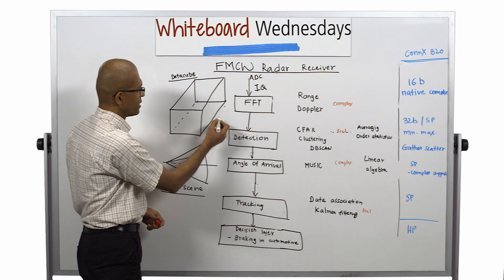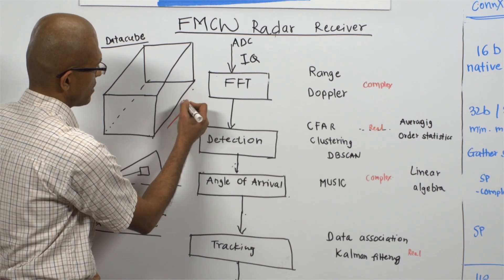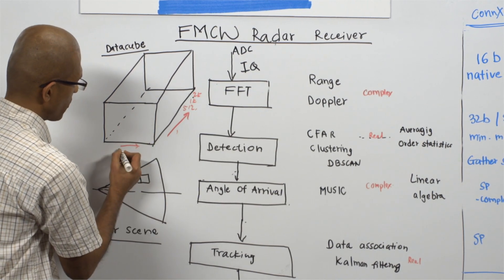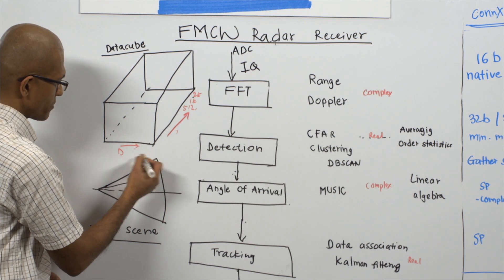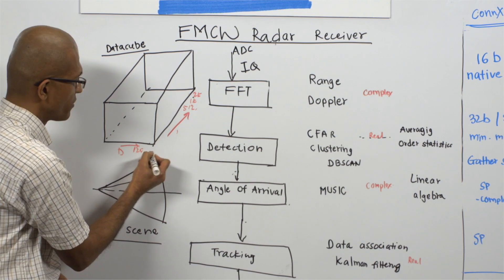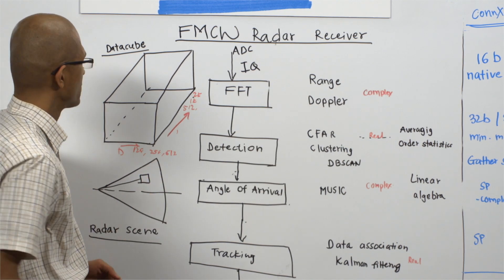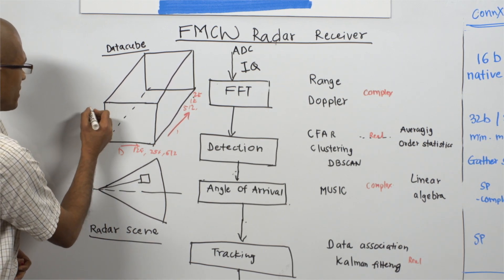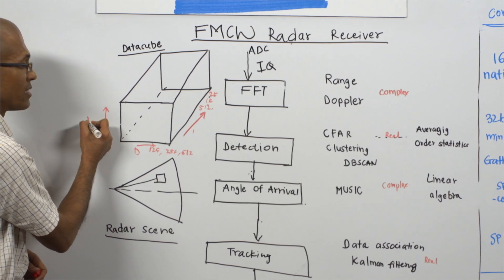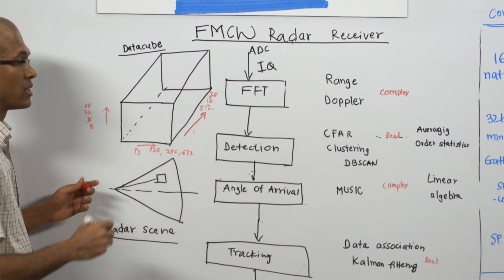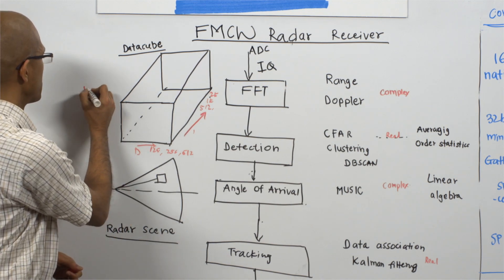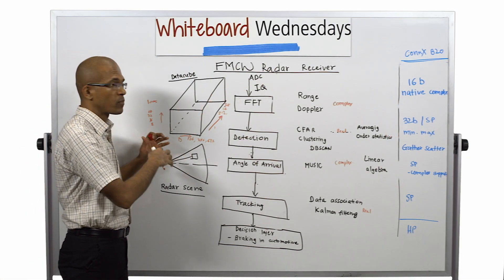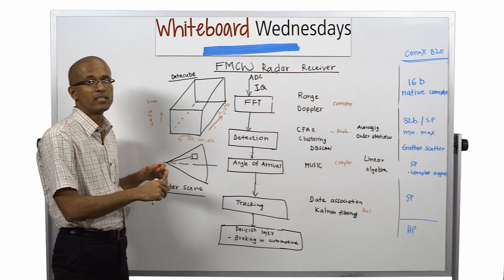In the radar data cube, the range samples can go from 512, 1K, or 2K, and the Doppler dimension can be from 128, 256, or 512 in the case of automotive radars. The radar receiver also has multiple virtual receive antennas, which can be from 8, 16, 32, 64, or for imaging radars it can go even into the thousands. This scales up the radar processing requirements very high in the case of today's imaging radars.